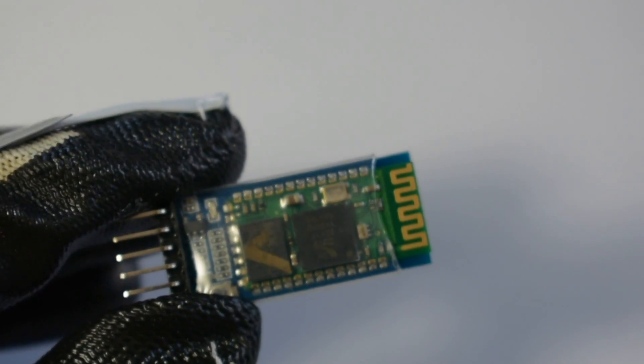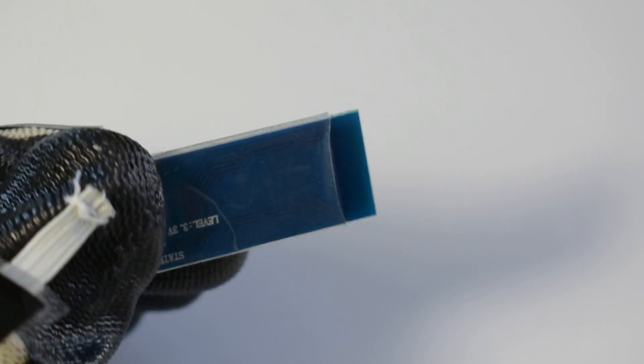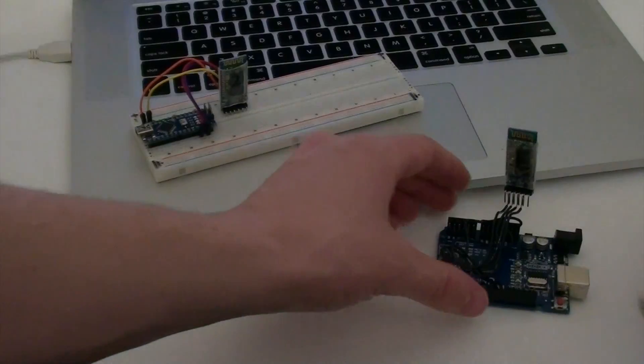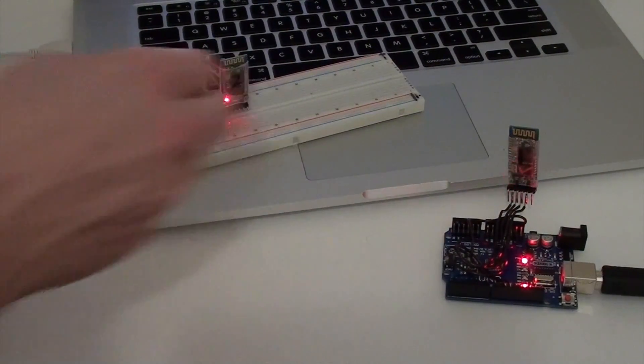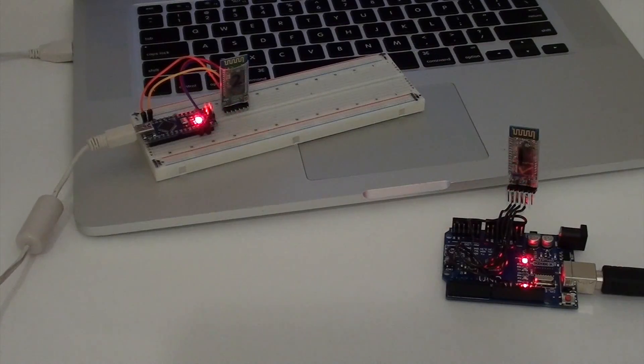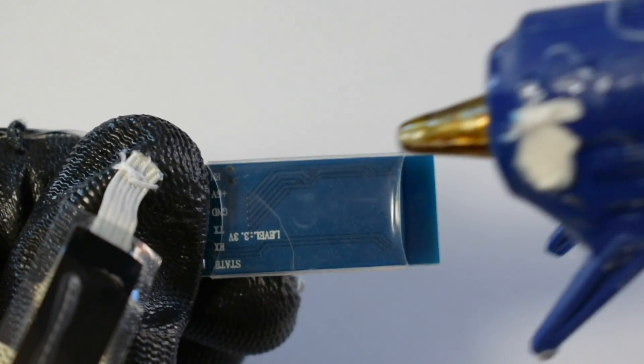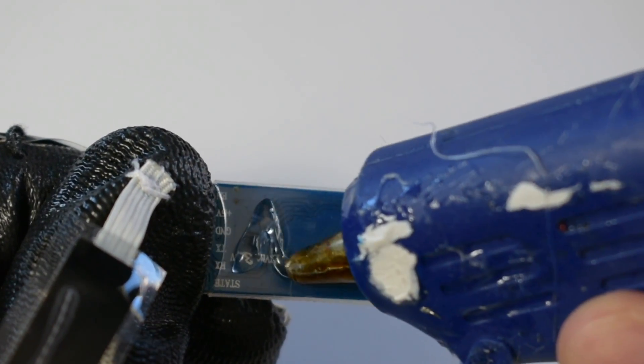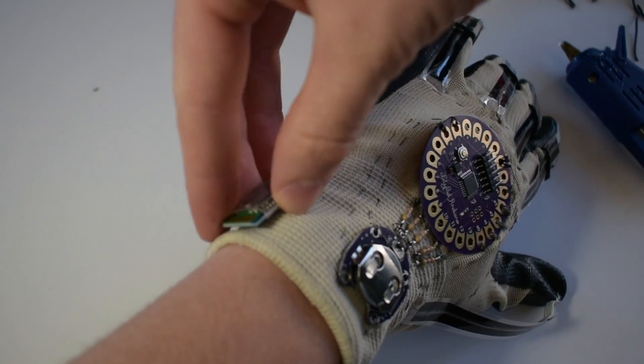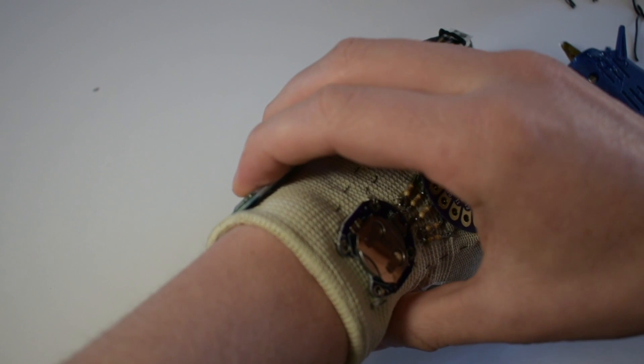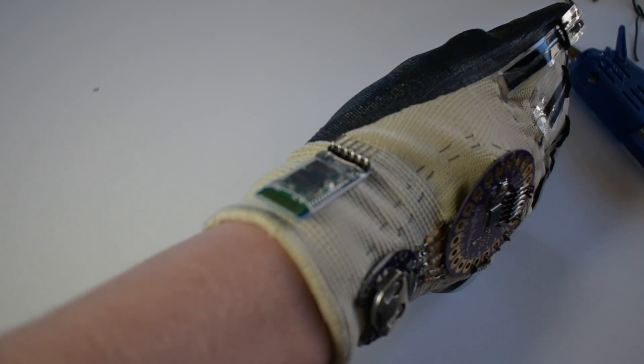My original plan was to use Bluetooth and wirelessly communicate between the glove and robotic arm. I previously successfully established communication between two HC-05 Bluetooth modules and an Arduino Uno. I naively assumed that this same technique could be easily translated to the Arduino lily pad. However, I ran into issues with the baud rate, which is the speed at which data is sent through the serial communication.